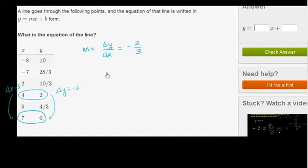And so our equation is going to be y is equal to negative 2 thirds x plus b.